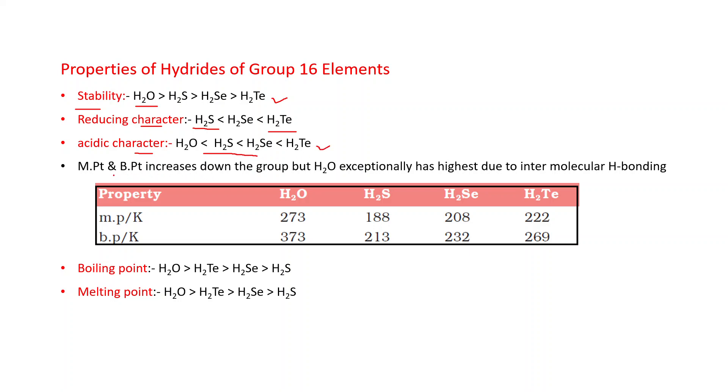If we compare their melting point and boiling point, generally this increases down the group. Why? Because these hydrides have van der Waals forces, which depend on size and molecular mass. Size and molecular mass increase from top to bottom. That's why melting point and boiling point also increase. But water exceptionally has highest due to intermolecular hydrogen bonding.